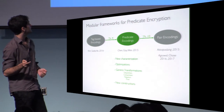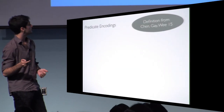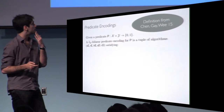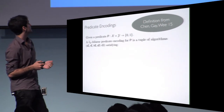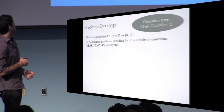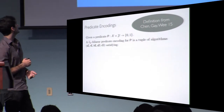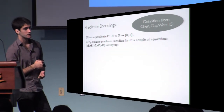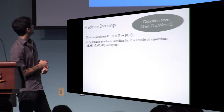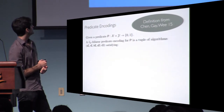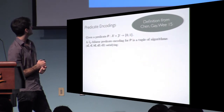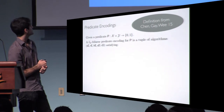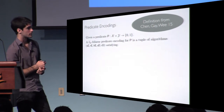Now I will define predicate encodings using the original definition. Predicate encodings are five algorithms. The first, SE, stands for sender encoding and is used in encryption. The next two, called receiver encoding and key encoding, are used for key generation. The remaining two are also used for decryption.